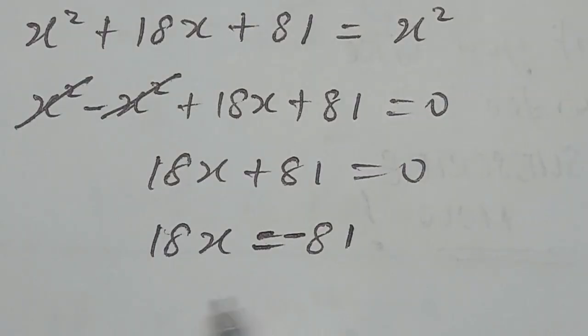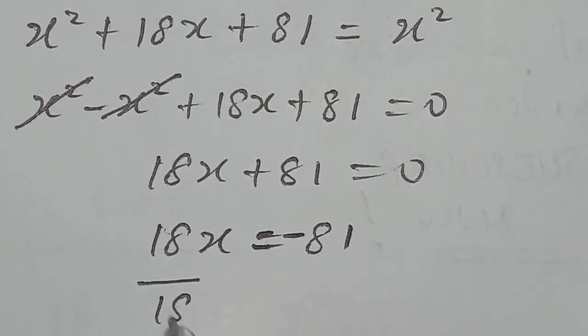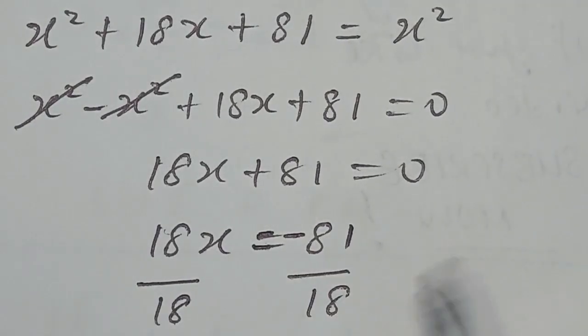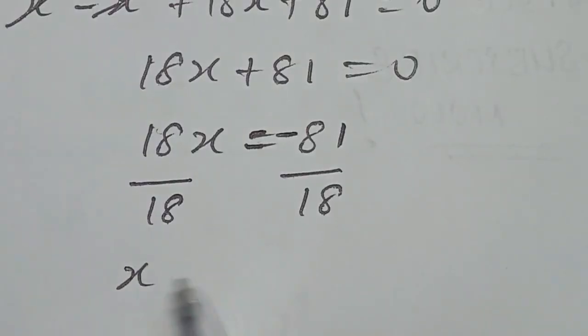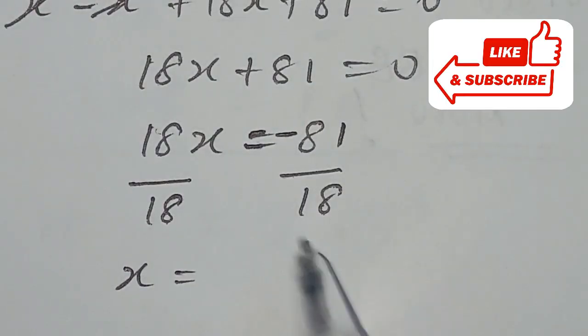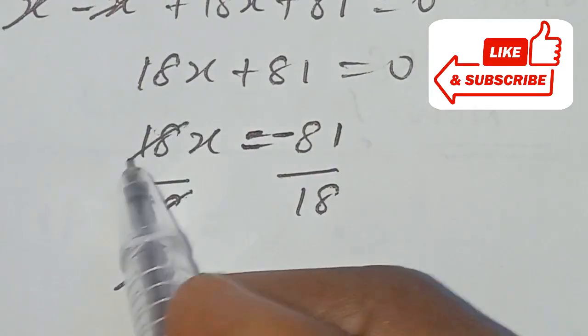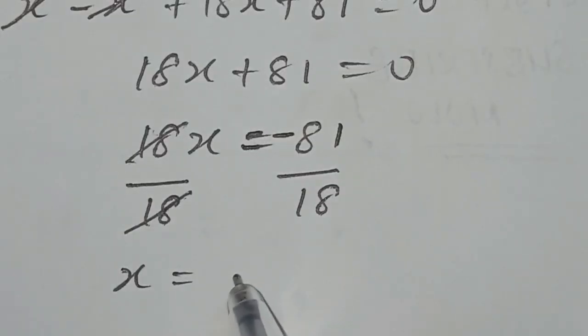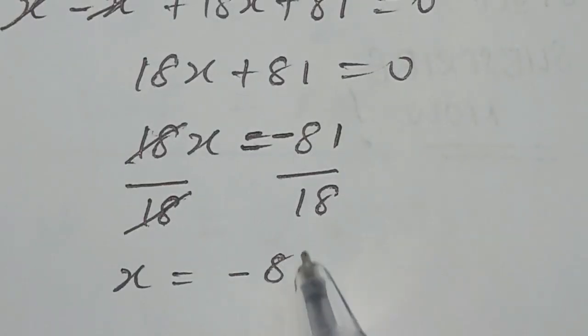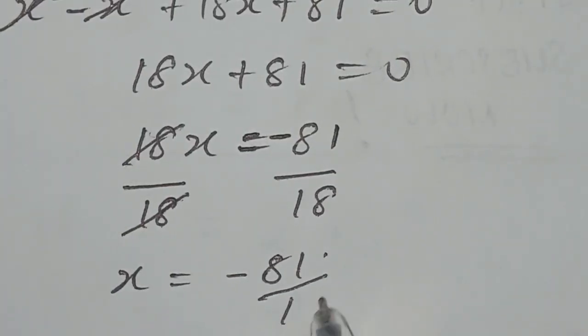So now, to isolate x, we divide both sides by 18. So now, we have x to be equal to, if this cancels out with this, x will now be equal to minus 81 over 18.